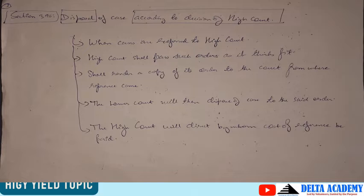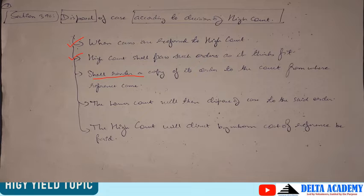Jab cases High Court ke paas refer hote hain, to High Court kuch aise orders pass karta hai jo usse reasonable reasons ke saath sahi lagte hain. High Court shall render a copy of its order to the court from where the reference came. Phir that lower court will dispose of the case according to the said order. The High Court will also direct by whom the cost of the reference is to be paid — yani ki reference application ka cost kaun pay karega, yeh High Court direct karegi, as the case may be.